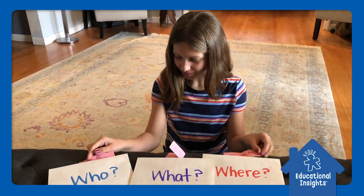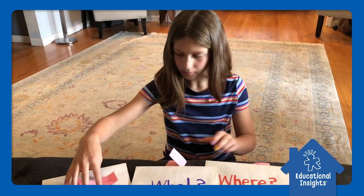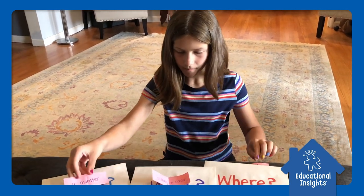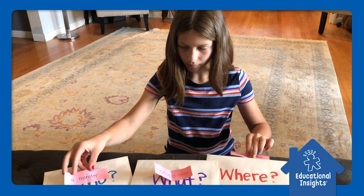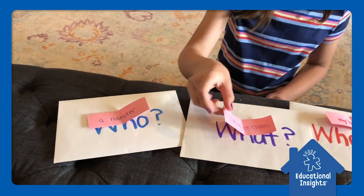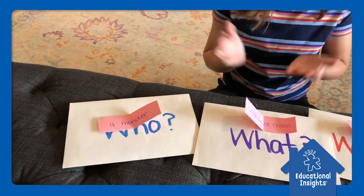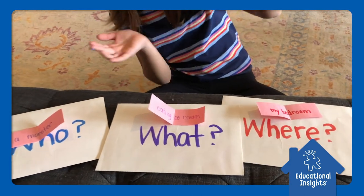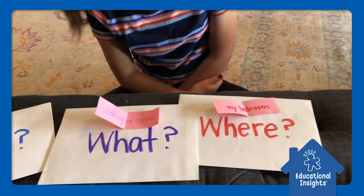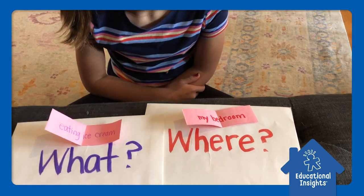For our younger friends, this might be enough. But for our older friends who are ready to write stories, they can now write a story about the things they've pulled out. They can give some details about the monster — does he have three eyes? Does he have horns? What flavor of ice cream is he eating? And what in the world is he doing in my bedroom?